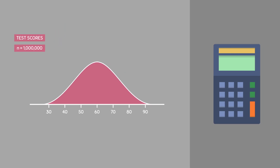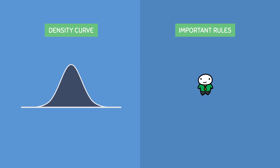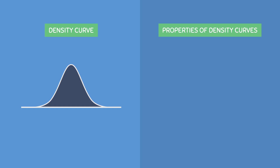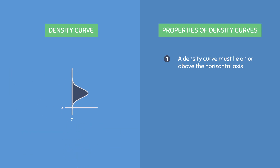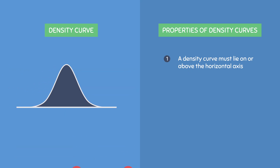You'll know how to calculate these exact areas in an upcoming video. But now that you know what a density curve is, we have to go over some very important rules for having a valid density curve — in other words, the properties of a density curve. The first rule is that a density curve must lie on or above the horizontal axis. Density curves drawn along the y-axis or ones that dip below the x-axis are invalid; a density curve has to sit on the x-axis to be valid.